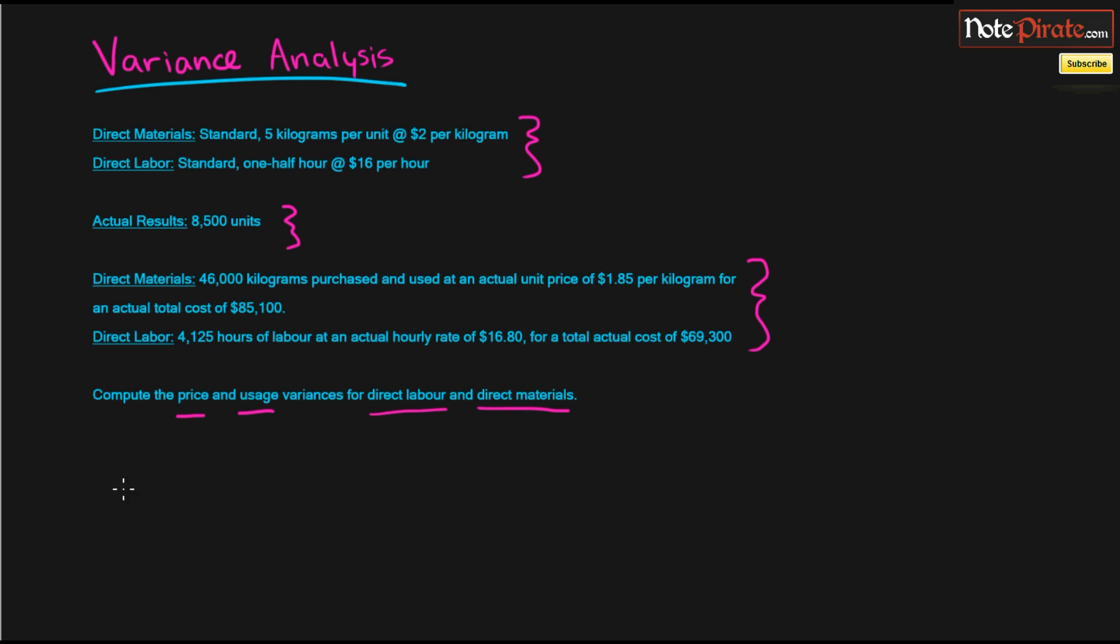I actually brought up a formula for price and usage variances. And the first is price variance is equal to actual price minus standard price times actual quantity. And if you want to figure out how I actually came up with that, you can go into the preceding tutorial because I explained it there. And the usage variance is represented by actual quantity minus standard quantity times standard price.